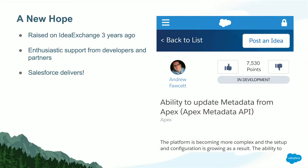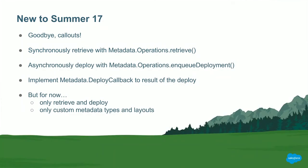With all these drawbacks in mind, some three years ago Andy, our CTO, raised an idea on IdeaExchange saying it's great we can make these changes in Apex, but wouldn't it be great if Salesforce provided this as a native feature so we wouldn't have all these drawbacks. That got a lot of support from the developer community, especially from ISVs. As a result, Salesforce took notice, and in Summer 17 we got a brand new feature called the Apex Metadata API.